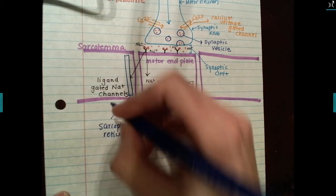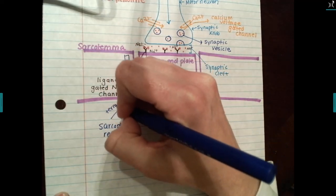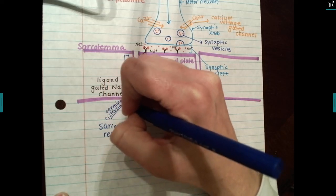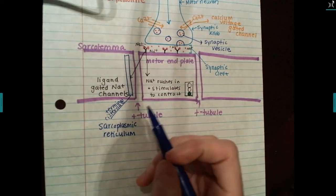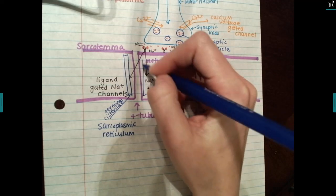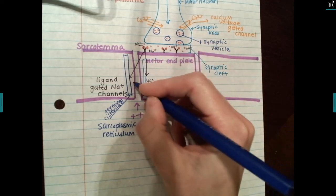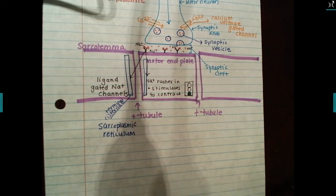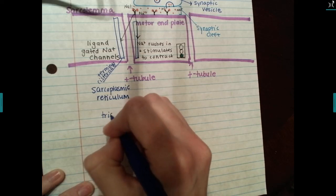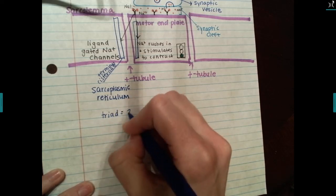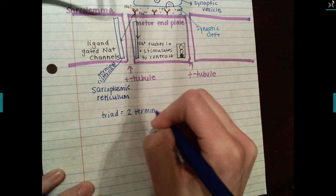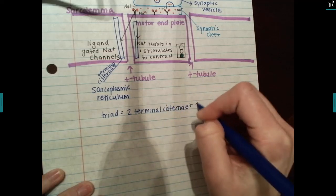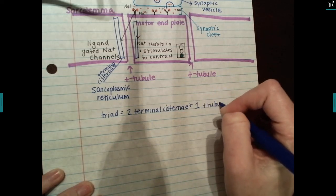The sarcoplasmic reticulum is going to store calcium. The specialized area close to the t-tubule is called the terminal cisternae — a cistern is a storage container. On either side of the t-tubule you have two terminal cisternae, and those two terminal cisternae plus one t-tubule make up a triad.